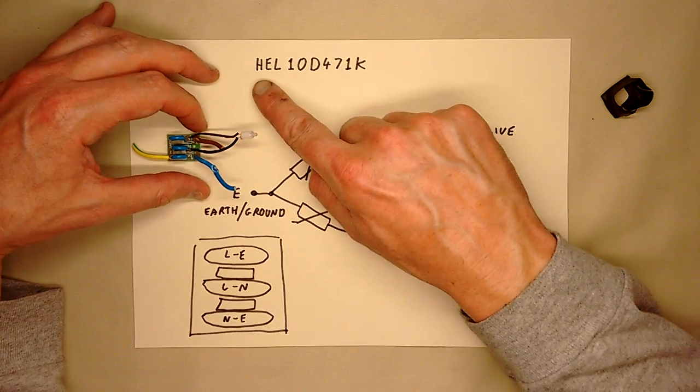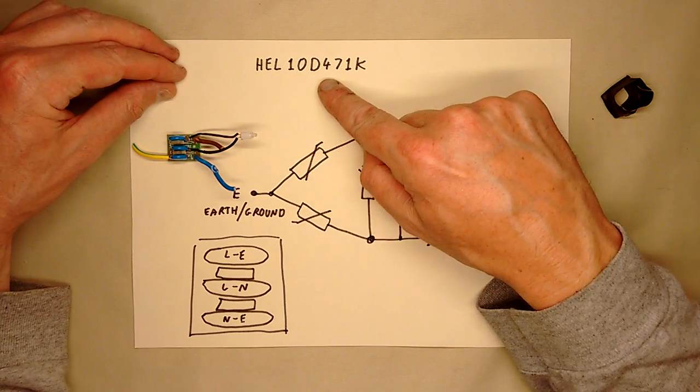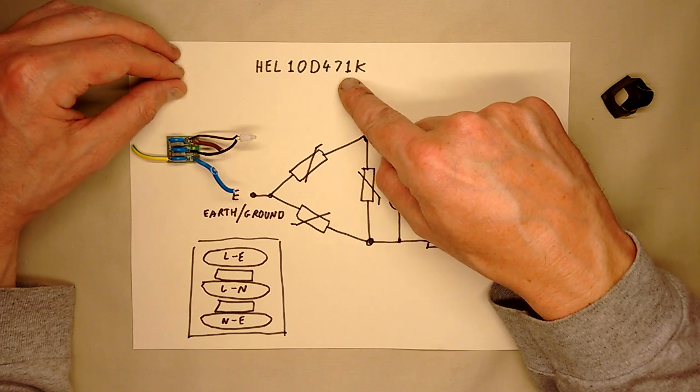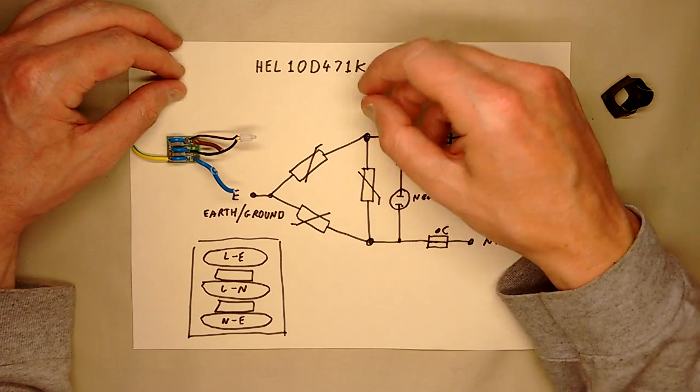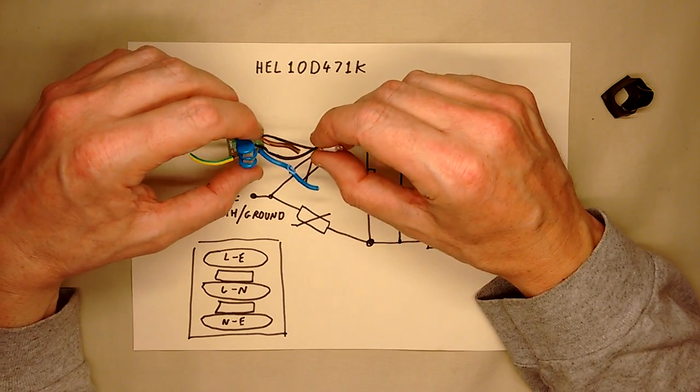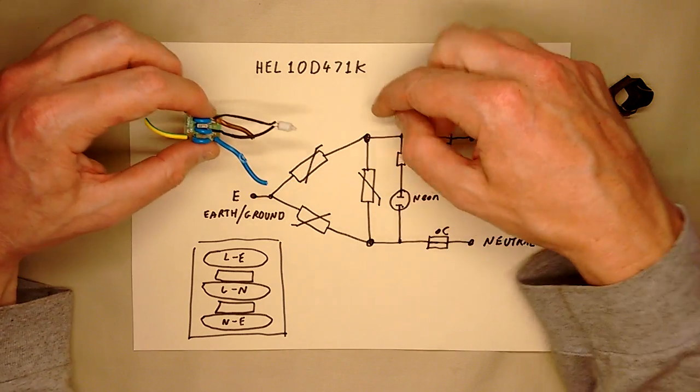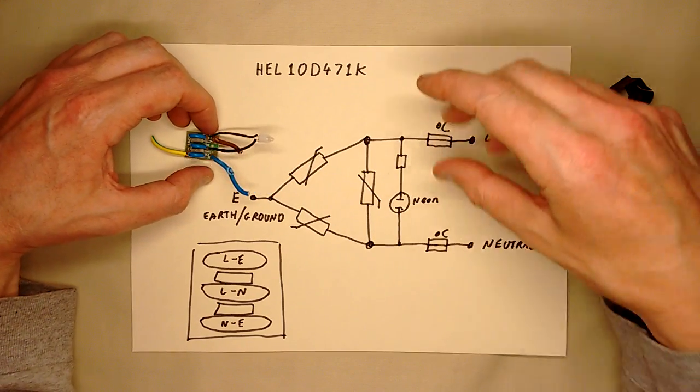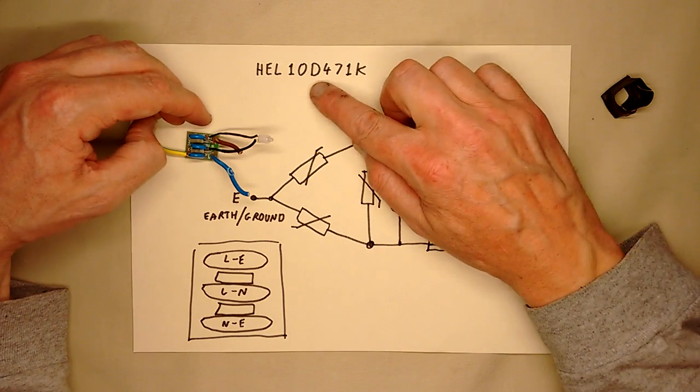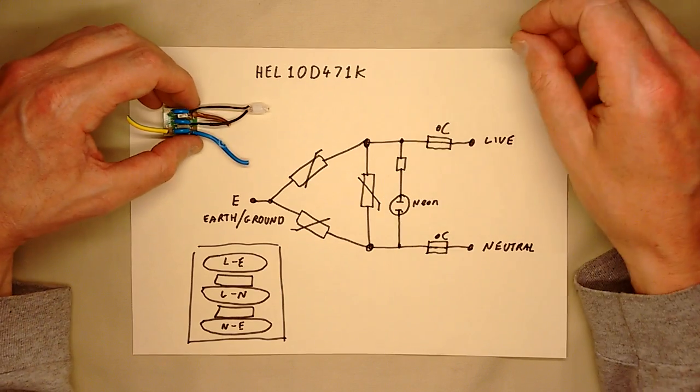The metal oxide varistors involved are HEL 10D471K, where the 471 usually indicates a 47 and 1 zero, 470 volts, which is the sort of rough mean voltage before they'll actually start conducting. If you consider that this is designed for 240 volt use in the UK and our peak mains voltage is about 330 volts, it's got a modest margin before it will actually kick in to start clipping transients.